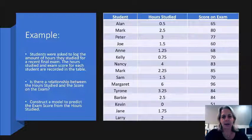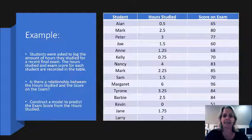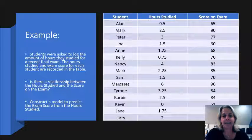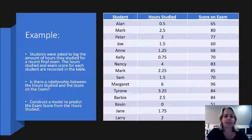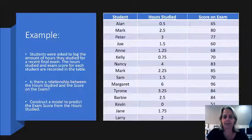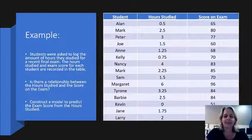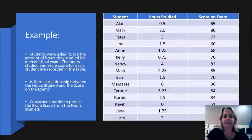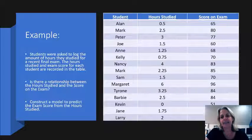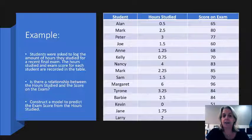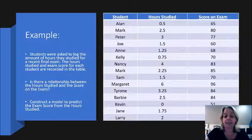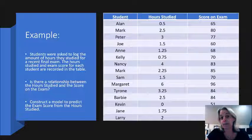So let's look at a more typical problem that you might see in statistics, either on the AP exam or in a class. In this particular example, you're given a set of data. It's two quantitative variables that are related on an individual. In this case, it's literally an individual, an individual student. But it could be any kind of ordered pair where you have an x and a y component. So in this problem, students were asked to log the amount of hours that they studied for a recent exam. The hours studied and the exam score in points are recorded in the table. Then you're asked, is there any kind of relationship between the hours studied and the score on the exam? Construct a model to predict the score, the exam score from the hours studied.